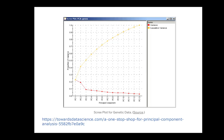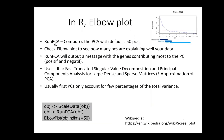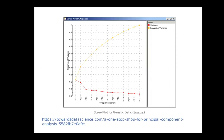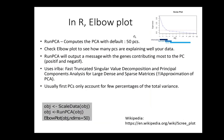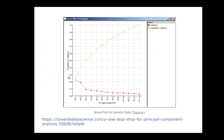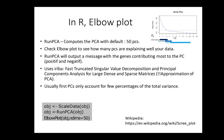In Seurat, run_pca uses a fast approximation of PCA computing only a subset of principal components — by default 50. Since it is an approximation, you cannot calculate exact percentage of variance per PC, but eigenvalues still indicate which PCs are informative versus noise.